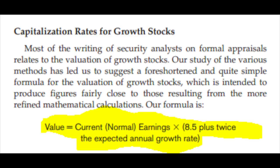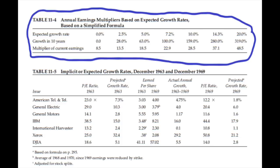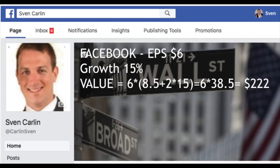Graham's simplified formula: the value of a growth stock equals the current normal earnings times (8.5 plus twice the expected annual growth rate). In his table, with an expected growth rate of 10% per year over the next seven years, a multiplier of 28.5 is acceptable. For five to seven years of expected growth at 20%, a PE ratio of 50 is okay — but very few companies can grow that long at that rate. For example, with Facebook at $6 current earnings growing at 14.3%, the PE ratio would be 37.1, giving a stock price of $222.